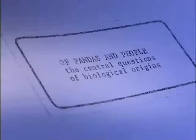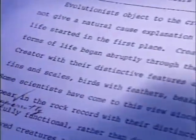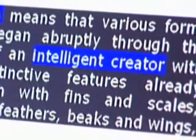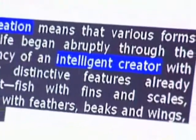This clue led our legal team to subpoena all the drafts of Of Pandas and People, where we found even more proof of its link to that creation science textbook in the form of two drafts of the book. One version said: 'creation means that various forms of life began abruptly through the agency of an intelligent creator, with their distinctive features already intact.'